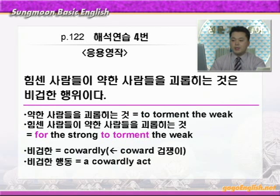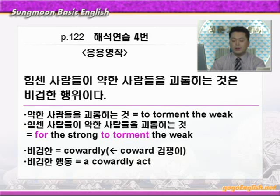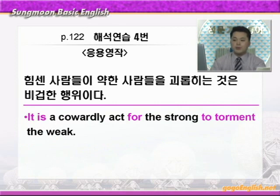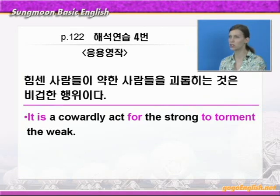비겁한 — 겁쟁이 이런 뜻의 명사 coward에서 ly가 붙은 형용사 cowardly 이걸 쓰면 되니까 비겁한 행동은 'a cowardly act' 이렇게 하면 되겠죠. 그럼 정리해 보겠습니다. 'it is A for B to C' 이런 구문에 맞춰서, 뭐뭐 하는 것은 비겁한 행동이다 — 'it is a cowardly act for the strong to torment the weak' 이렇게 하면 되겠죠. 이번 문법 포인트는 해석할 때 충분히 다뤄봤으니까 생략하도록 하죠.